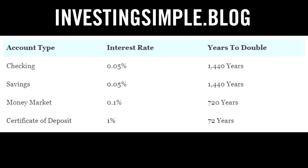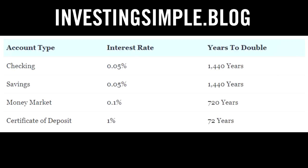A money market account has a slightly higher average rate of around 0.1% — at that rate it would take 720 years to double your money. Still a very lousy option. How about a CD? A short-term certificate of deposit might yield about 1%, meaning you'd double your money in 72 years. If you invested $10,000 as a 20-year-old, by the time you are 92 you'd have $20,000. The bank is simply not the best place to earn compound interest.